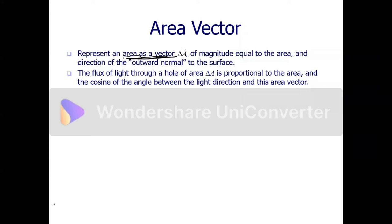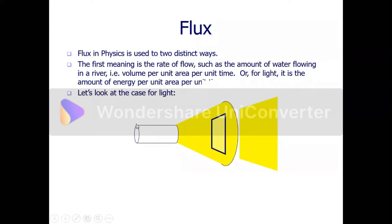The flux is basically the vector field passing through a given area. This is the area where the vector field such as light or water could pass. The flux depends on the orientation of this piece of paper. As I change the orientation, the flux is also changing — the amount of light actually crossing here is also changing. It means that the flux is related to the effective area available for the vector field to pass.